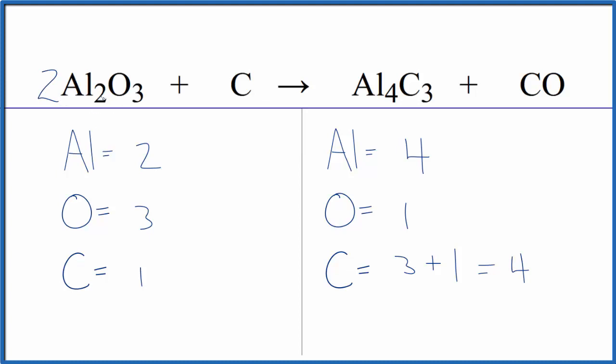Let's just start by balancing the aluminum. If we put a two in front of the Al2O3, two times two, that'll give us four. The aluminum atoms are balanced, and then we have three times two, that'll give us six oxygens.